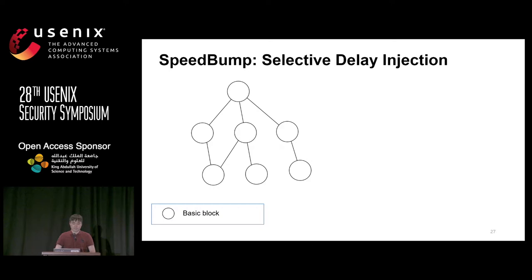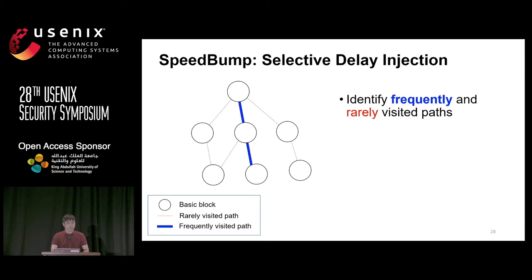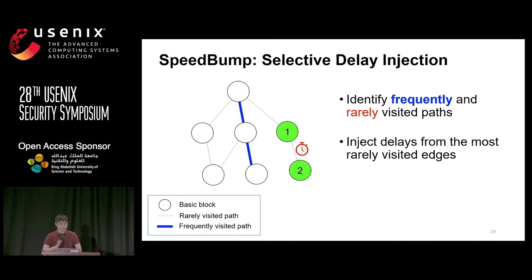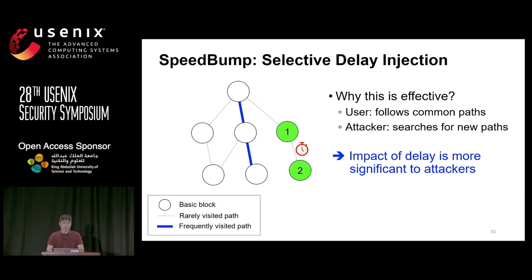Now let's talk about the first component. We are looking at a simple control flow. By using many valid and invalid samples, we first identify frequently and rarely executed paths. We then inject delays at the most rarely visited edges. In this example, the edge between nodes 1 and 2 is the most rarely visited, so we put the delay there. This is effective because normal users usually follow common paths, whereas attackers search for new paths — so the impact of delay is more significant to adversaries.